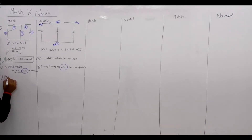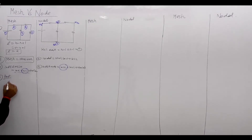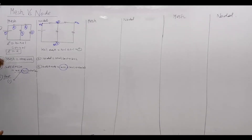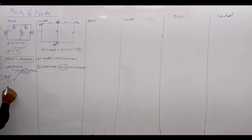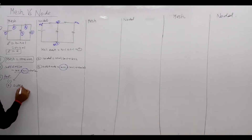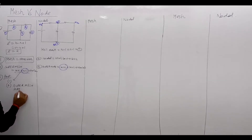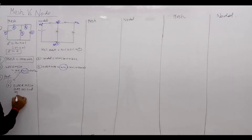The fourth point is the property of super mesh. The property is: super mesh uses KVL plus KCL plus Ohm's law. Additionally, super mesh has no current of its own.